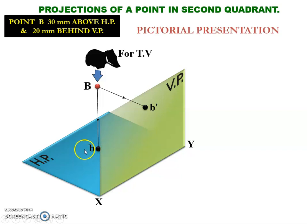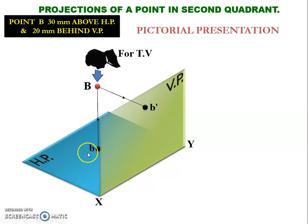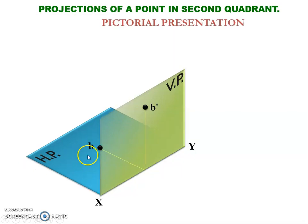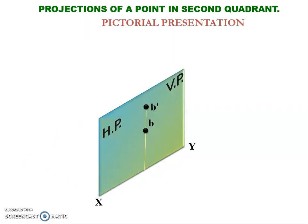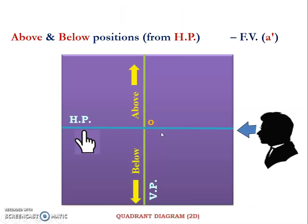After getting this top view point small letter b, we need to rotate this horizontal plane along with this top view point 90 degrees clockwise. So the horizontal plane will join with the vertical plane and it will give us the end solution like this.